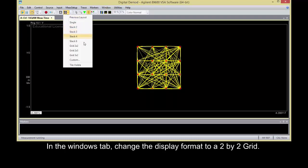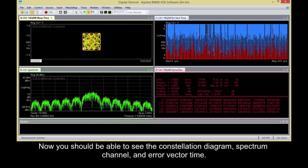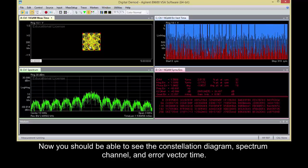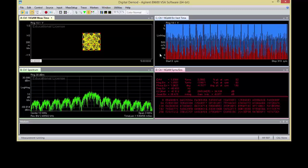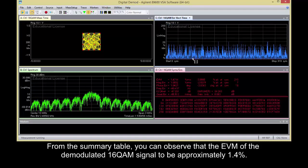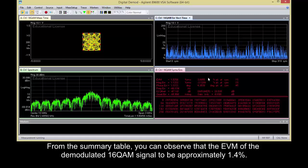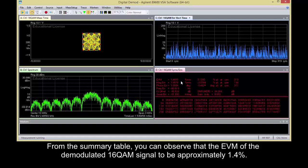In the Windows tab, change the display format to a 2x2 grid. Now you should be able to see the constellation diagram, spectrum channel, and error vector time. From the summary table, you can observe that the EVM of the demodulated 16QAM signal is approximately 1.4%.